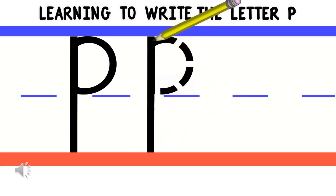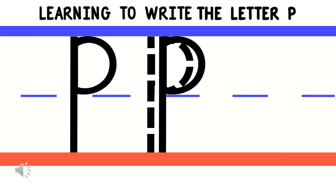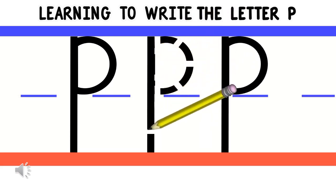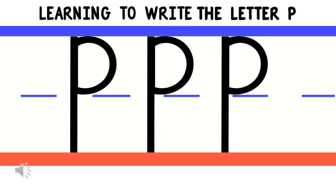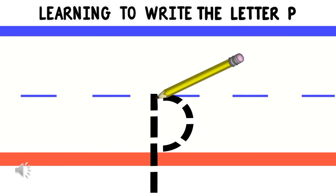For small letter P, let's begin from the middle going down to the bottom. Then, go back to the middle. Then, make a curved line going to the bottom. Now, you have a small letter P.